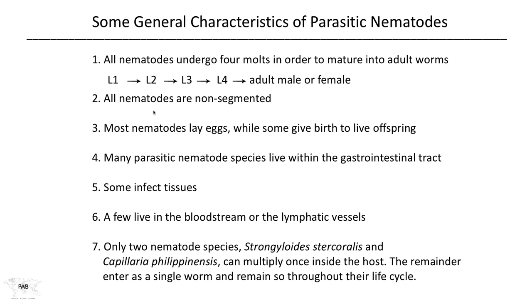All nematodes are non-segmented, so that's how you can tell them apart from other life forms. Most nematode species lay eggs, while some also give birth to live offspring. In fact, there's one — Capillaria philippinensis — which begins by giving off live offspring, and then as the immune system kicks in, it starts to produce eggs. So this is one that can do both.